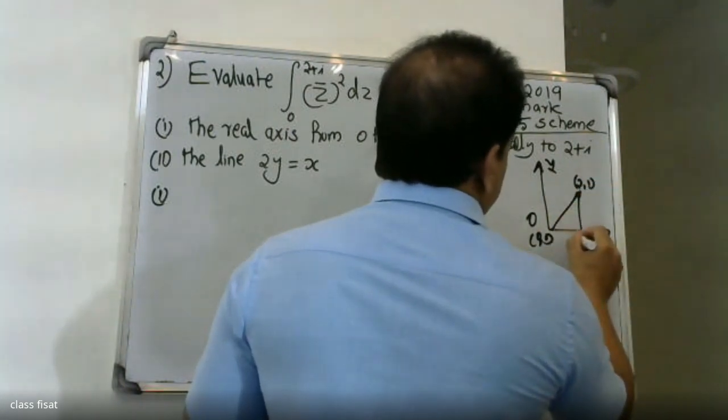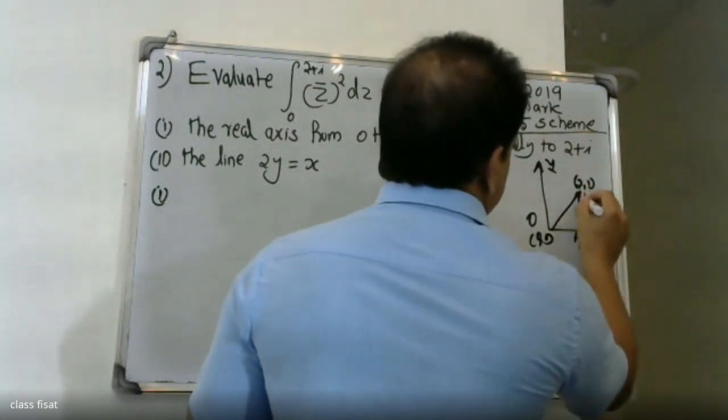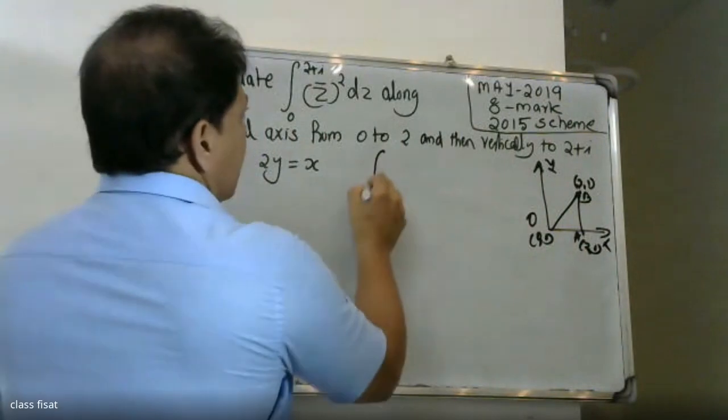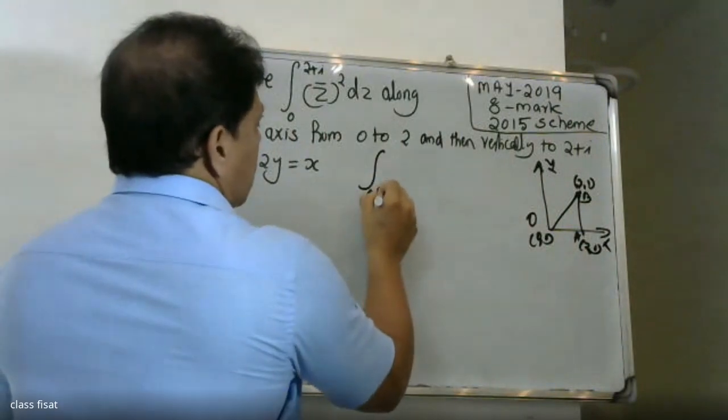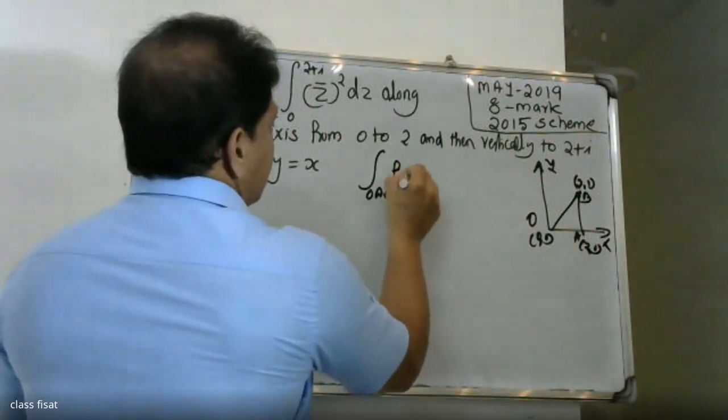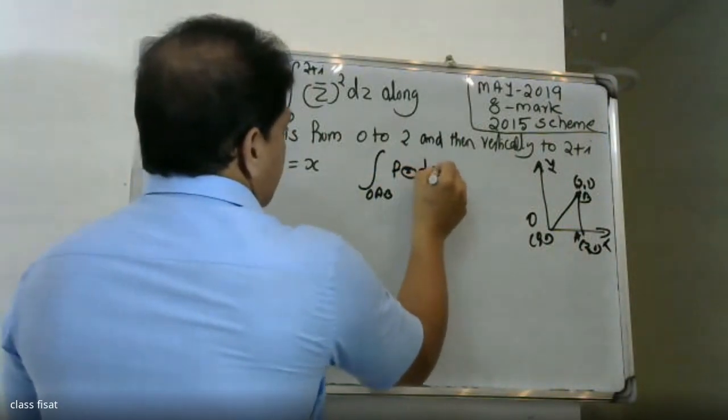The path has one segment: O, A, B. The integral over path OAB is denoted as integral OAB of f(z) dz.